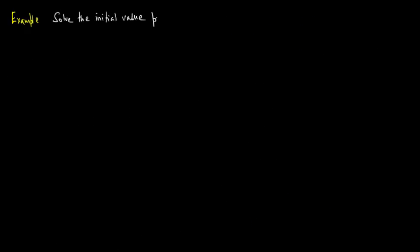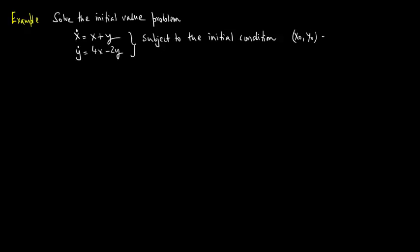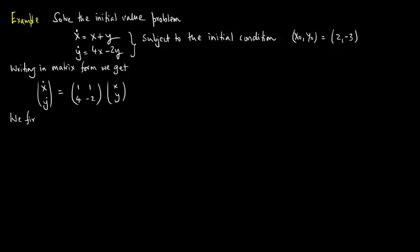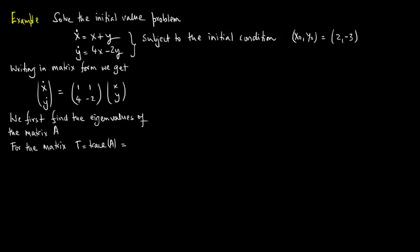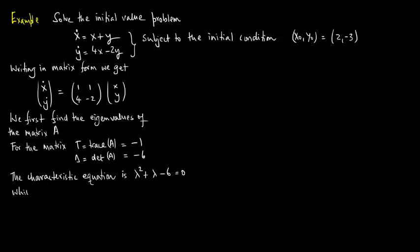Solve the initial value problem: x dot equal to x plus y and y dot equal to 4x minus 2y. Writing in matrix form, x dot equals the matrix (1, 1; 4, -2) times the vector (x, y). We first find the eigenvalues of matrix A. The trace of A equals minus 1 and the determinant of A equals minus 6. The characteristic equation is lambda squared plus lambda minus 6 equals 0, giving lambda 1 equal to 2 and lambda 2 equal to minus 3.